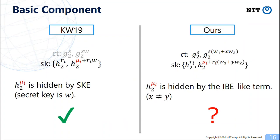Here, we show basic components of the KW scheme and our scheme. In the KW scheme, basic components have the form as shown in the left side. In a secret key, the secret shares mu_i are hidden by an SKE scheme where the secret key is W. On the other hand, the counterpart of our scheme has an IBE and a NIBE-like scheme.